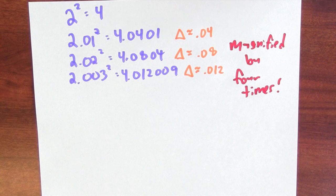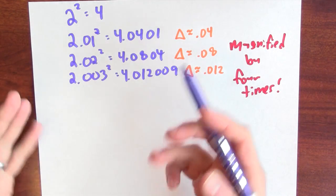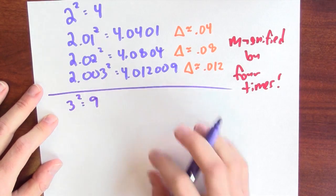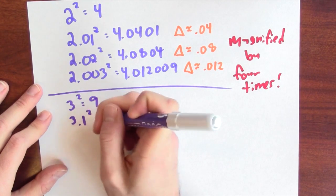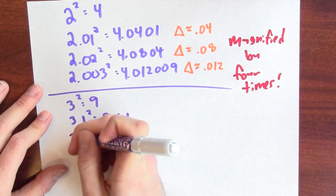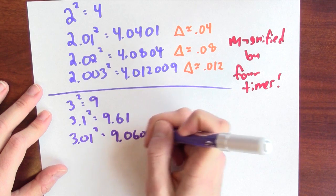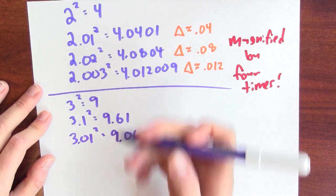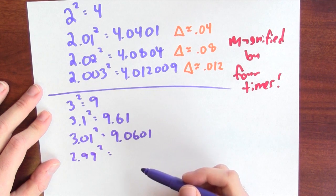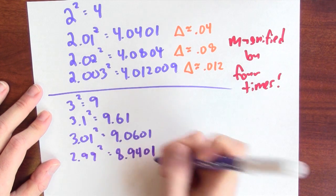Let's see this at a different input point. Instead of plugging in 2, let's plug in 3 and see what happens. 3 squared is 9. What's 3.1 squared? That's 9.61. What's 3.01 squared? That's 9.0601. And wiggling down a little bit, what's 2.99 squared? That's 8.9401.